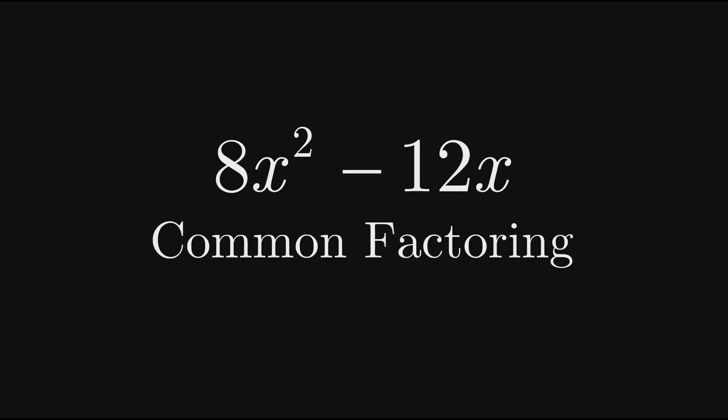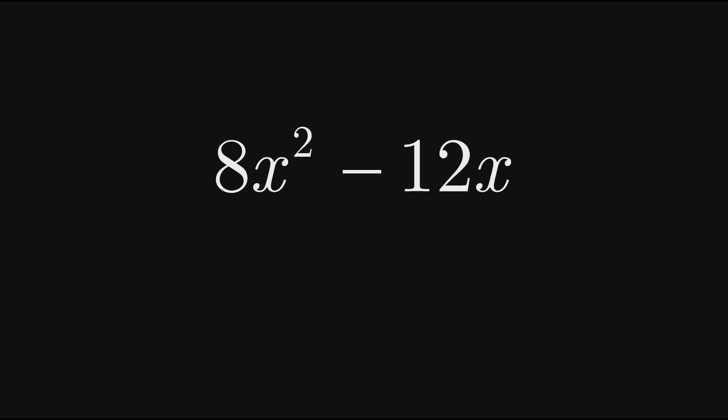We'll be using a process called common factoring which will give us factored expressions that look like this, where we have a monomial multiplied by a binomial.